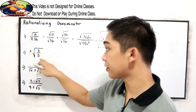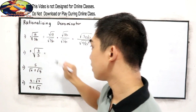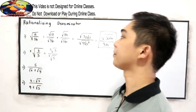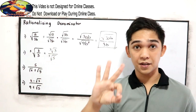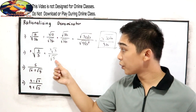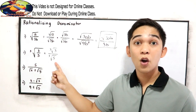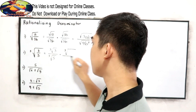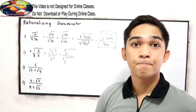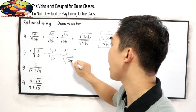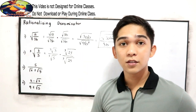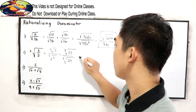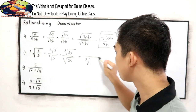Next, number 2: cube root of 3 over 5. Step by step — cube root of 3 all over cube root of 5. Our index is 3, so we need to find a number that if we're going to multiply in our radical in the denominator will give us a perfect cube. So that is cube root of 25. Why 25? Because 25 times 5 is 125, and 125 is a perfect cube.